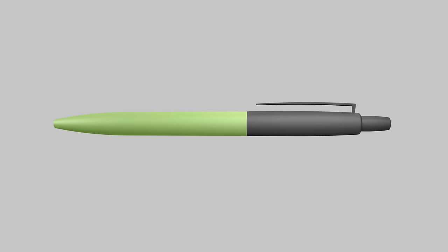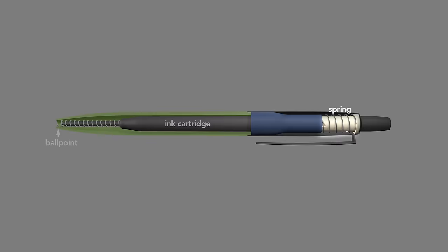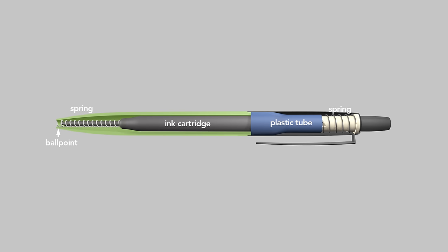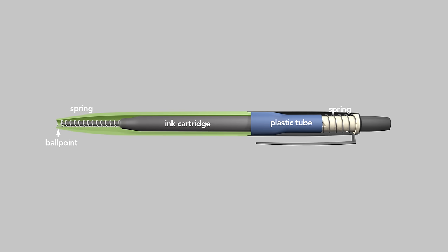To understand why these clicks occur, let's look inside. The pen's barrel houses an ink cartridge with the ballpoint tip, two springs, one at the top and one at the bottom, and a plastic tube which is press-fit inside the metal barrel of the pen so that it's fixed in place. Inside that tube is where all the action happens.